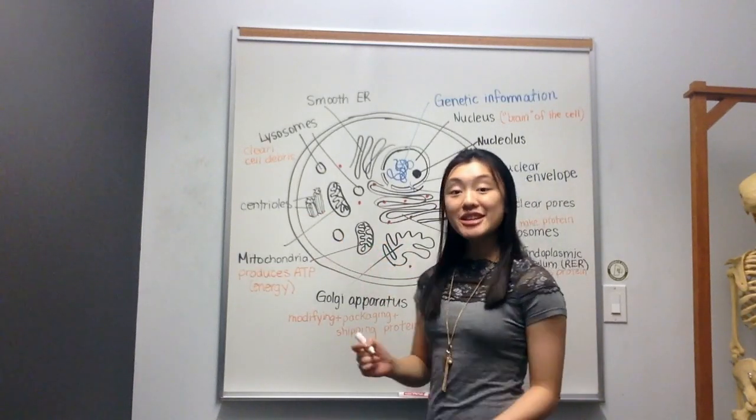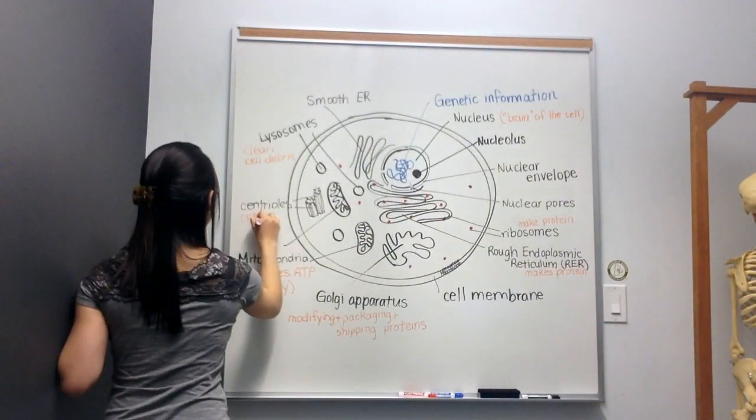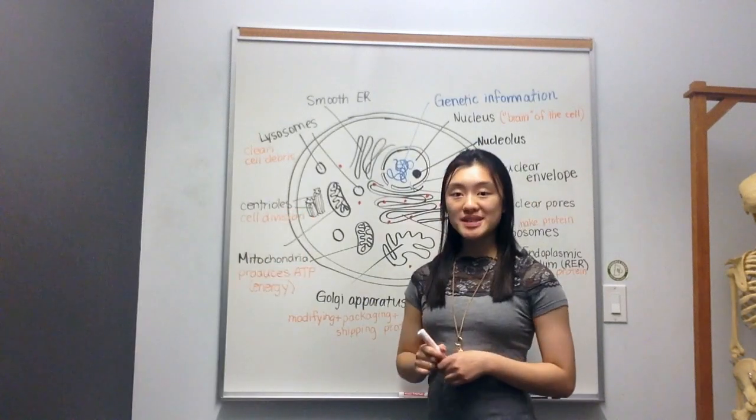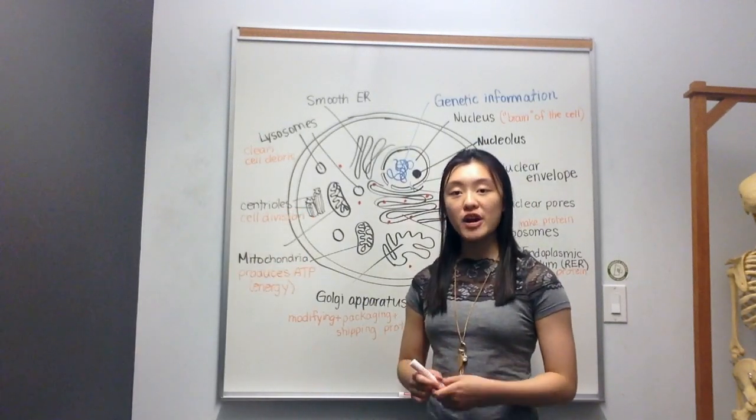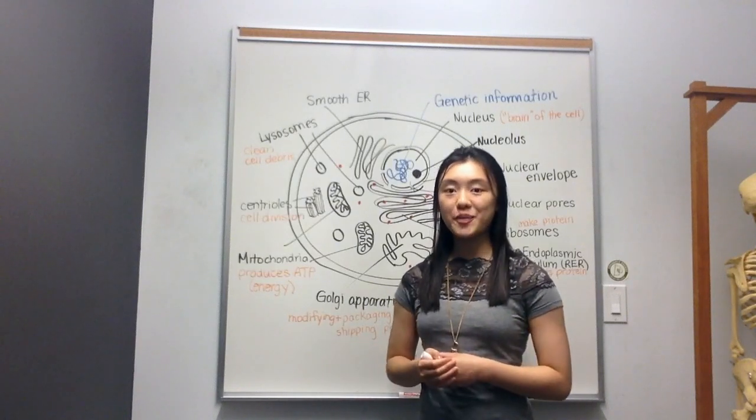Next, we have the centrioles. The centrioles play a role in cell division. During mitosis, they have an important part in releasing spindle fibers that pull the genetic information in half.